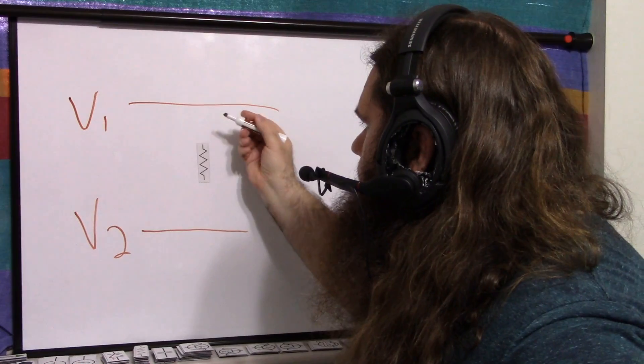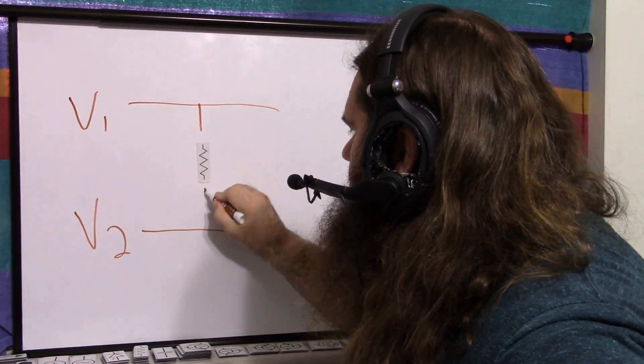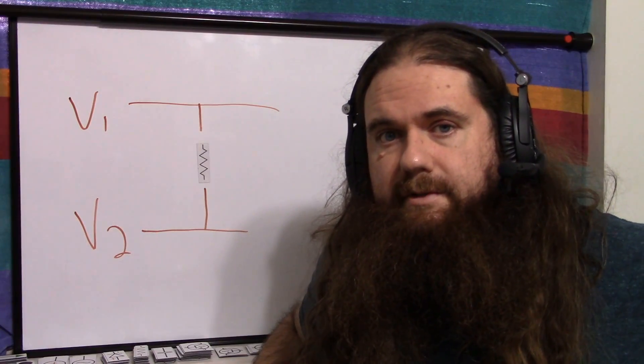So you know how I said, if you have two voltages and you put a resistor in parallel between them like this, nothing happens? That's not true.